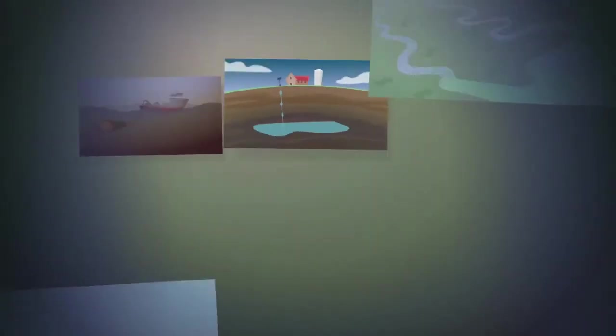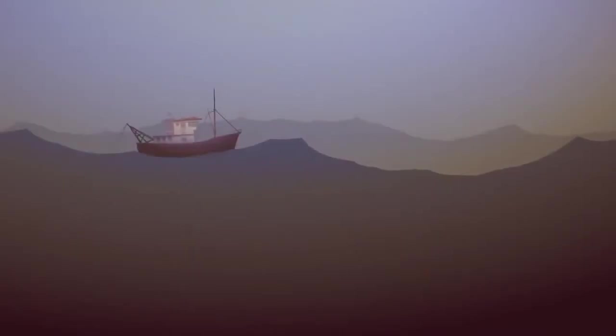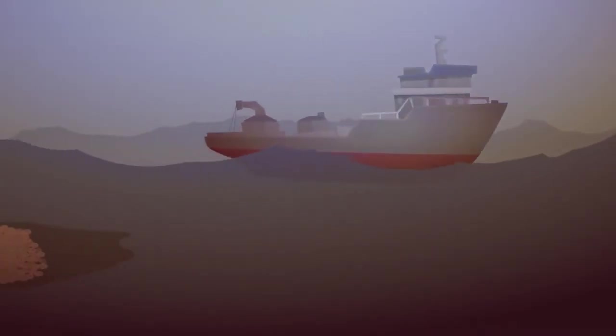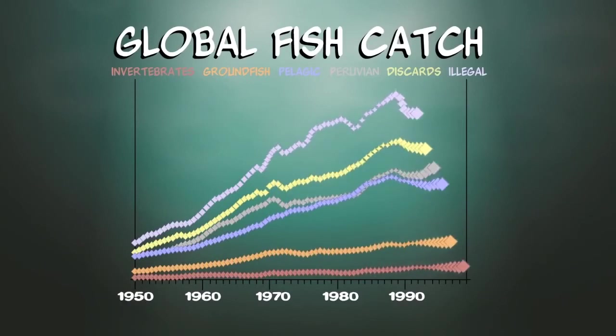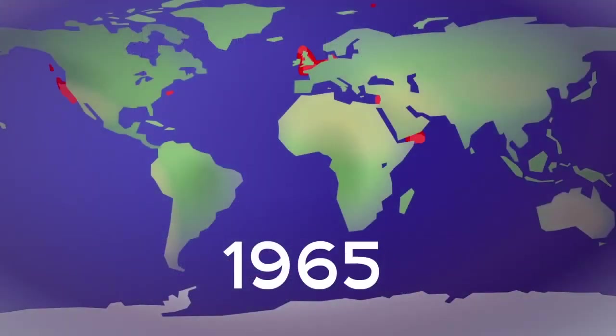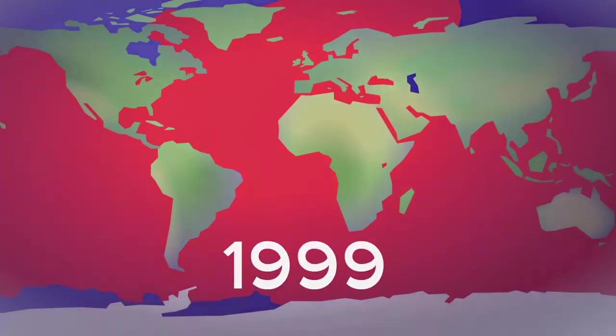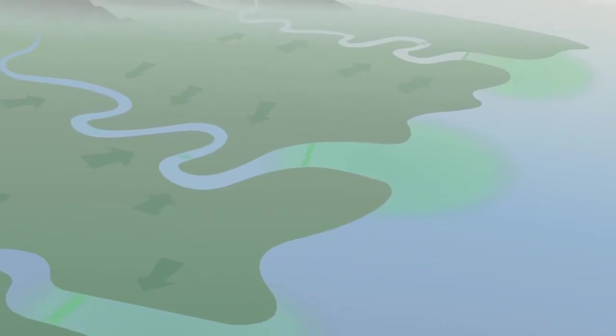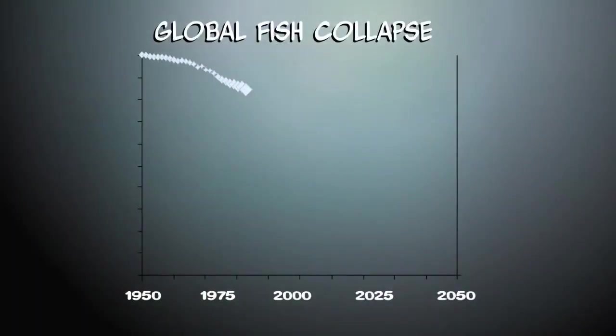Besides fossil fuel decline, there are several threats to the current system of food production. Global fish catches peaked in the late 1980s, forcing fishermen to move into deep waters. Nitrogen runoff by fossil fuel-based fertilizers poisons rivers and seas, creating enormous dead zones. At this rate, all fish populations are projected to collapse by 2048.